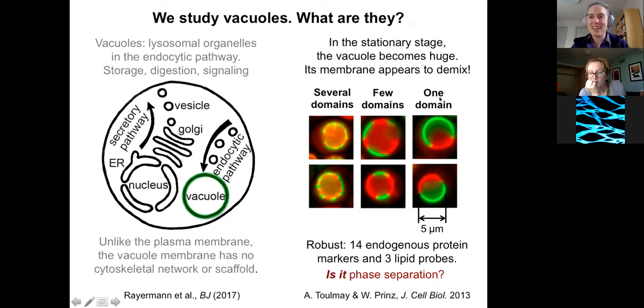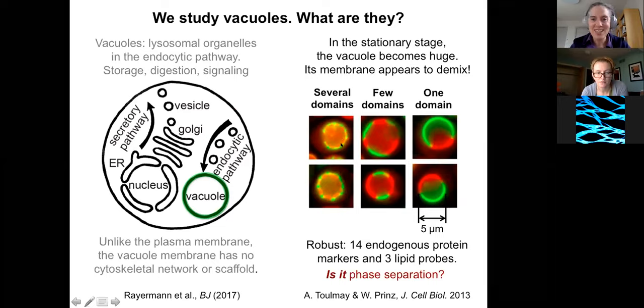Let's start over on the right-hand side. Here's a case where there's a vacuole inside of a living cell, and it contains only one domain on its membrane. There are also cases in which there are a few domains. There are also cases in which there are several domains. Here you can really start to see that the membrane that's in between is bulging into the vacuole. They saw this with 14 different protein markers, three different lipid probes. It didn't matter how they labeled it, they got the same results. So to me, to my eyes, this looks like phase separation. And a question is always, if it looks like phase separation, but is it really phase separation?